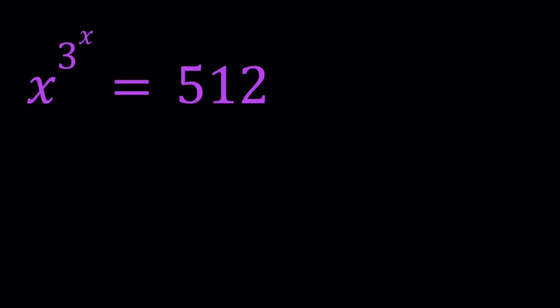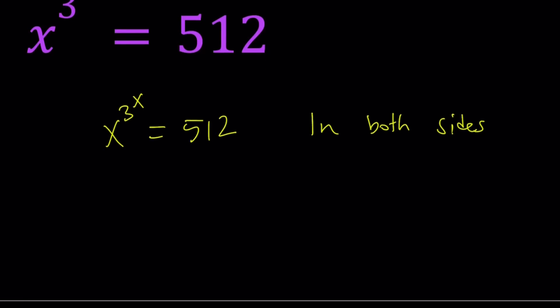First of all, I want you to set these equal to each other and then ln both sides. A lot of times with exponential equations, if you don't have an immediate solution, you may want to ln both sides, bring the exponents down and look at it from a different angle. That's definitely going to help. So we have ln x to the power 3 to the power x equals ln 512. Now, in case you didn't know, 512 can be written as 2 to the 9th power or 8 to the 3rd power.